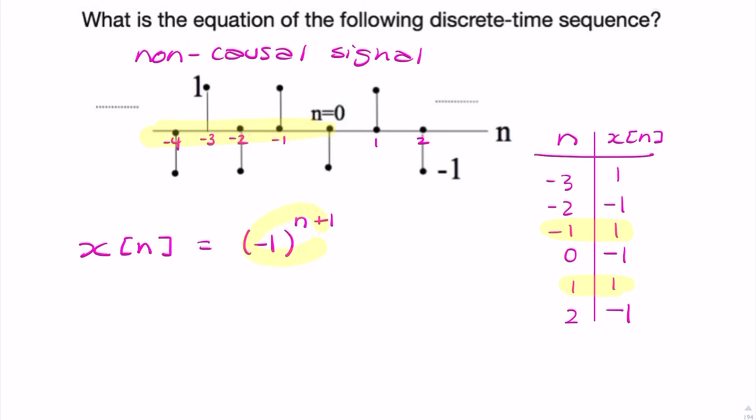So all we need to say is minus 1 to the power n plus 1, or equivalently, minus 1 to the power n minus 1. Or you could add any odd number to n to find x of n. So that's your final answer.